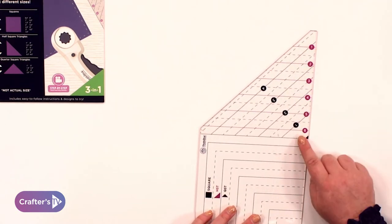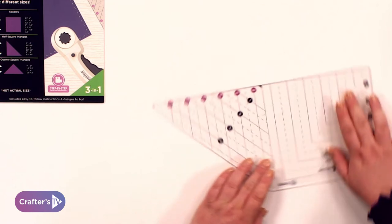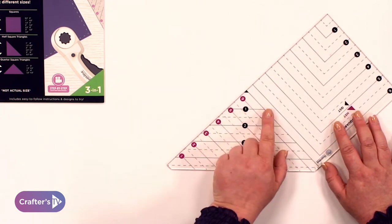Turn it again. These are your quarter-square triangle markings.